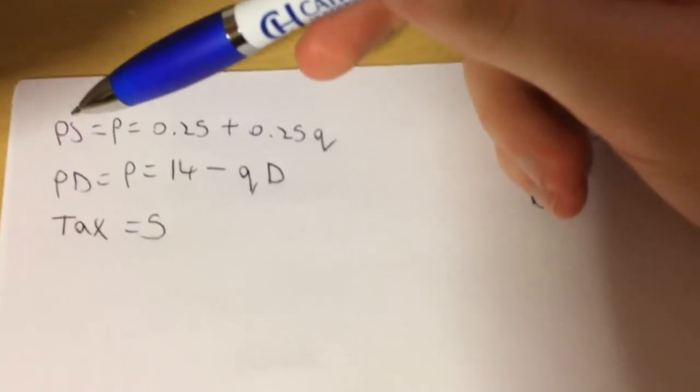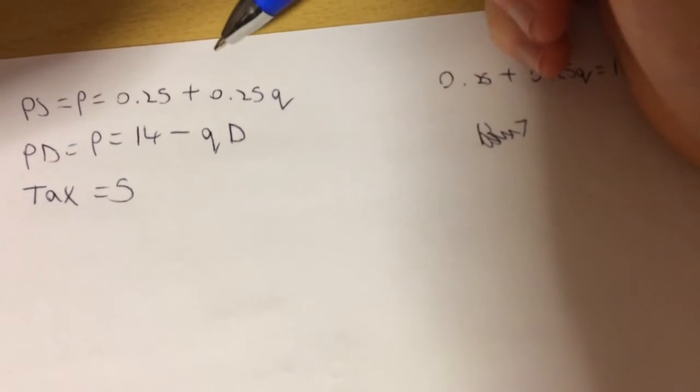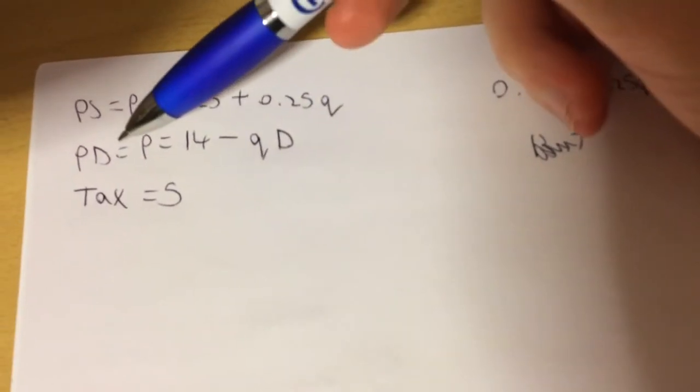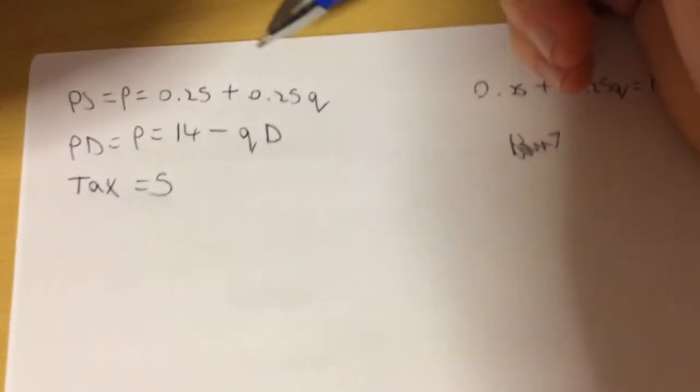Say if we start with the price supplied equals P equals 0.25 plus 0.25Q and the price demanded equals P, which is 14 minus quantity demanded, and the tax is 5.